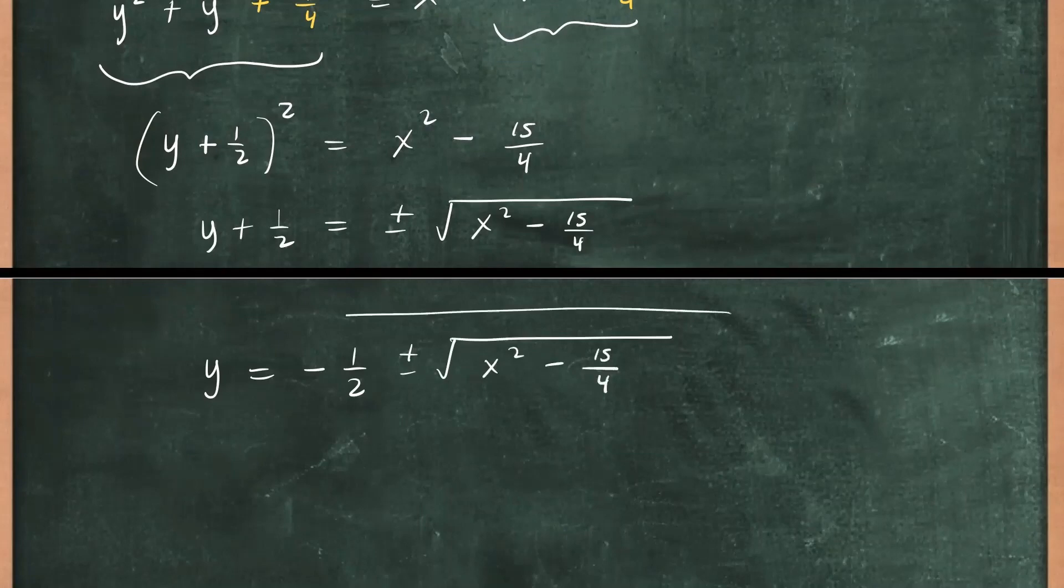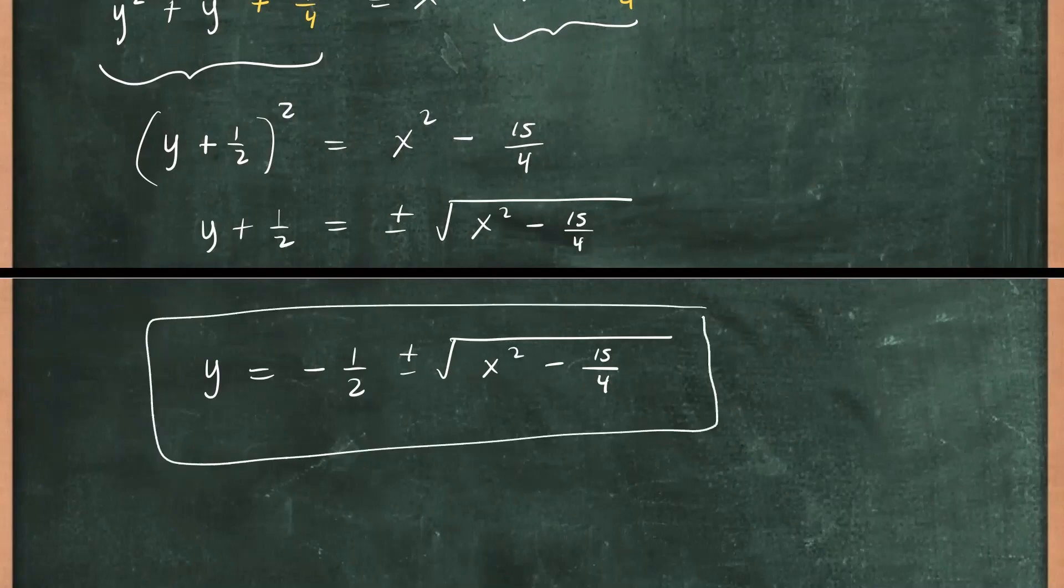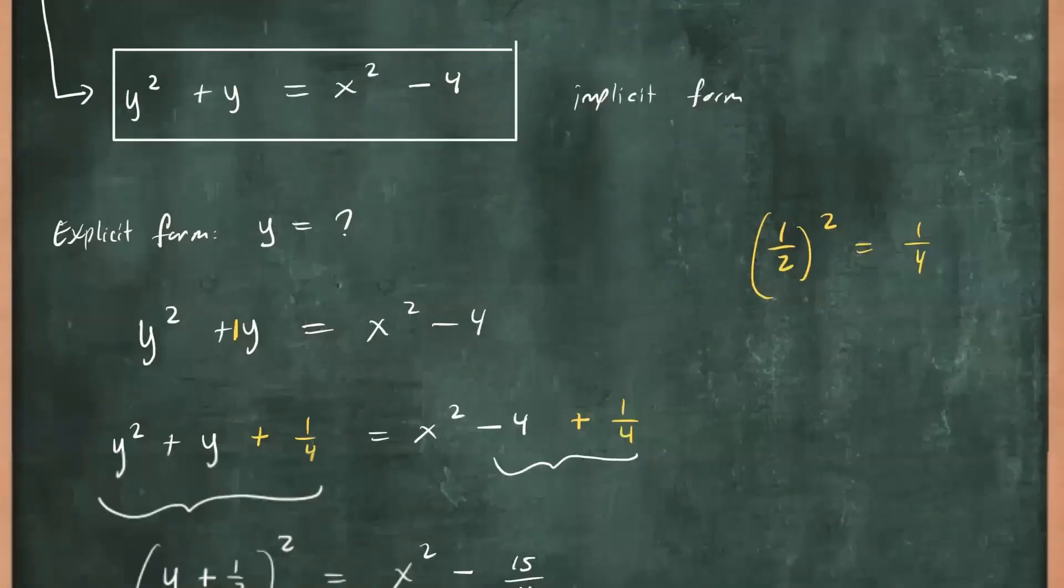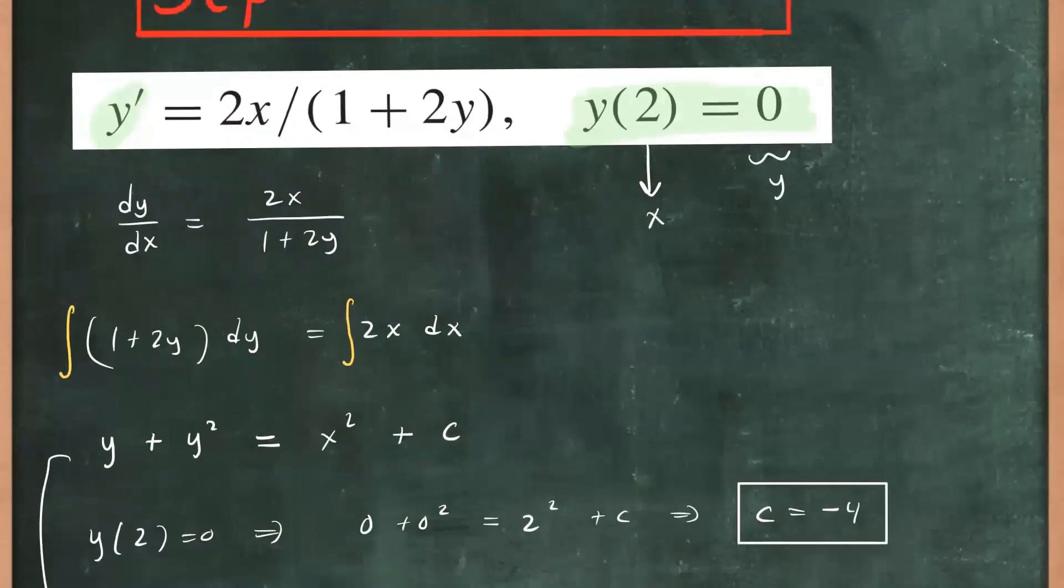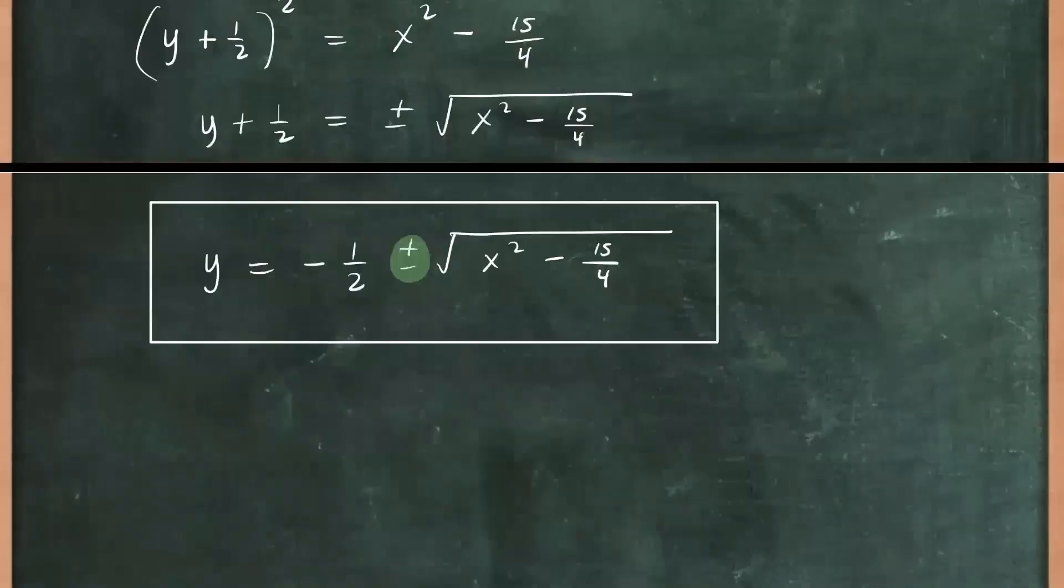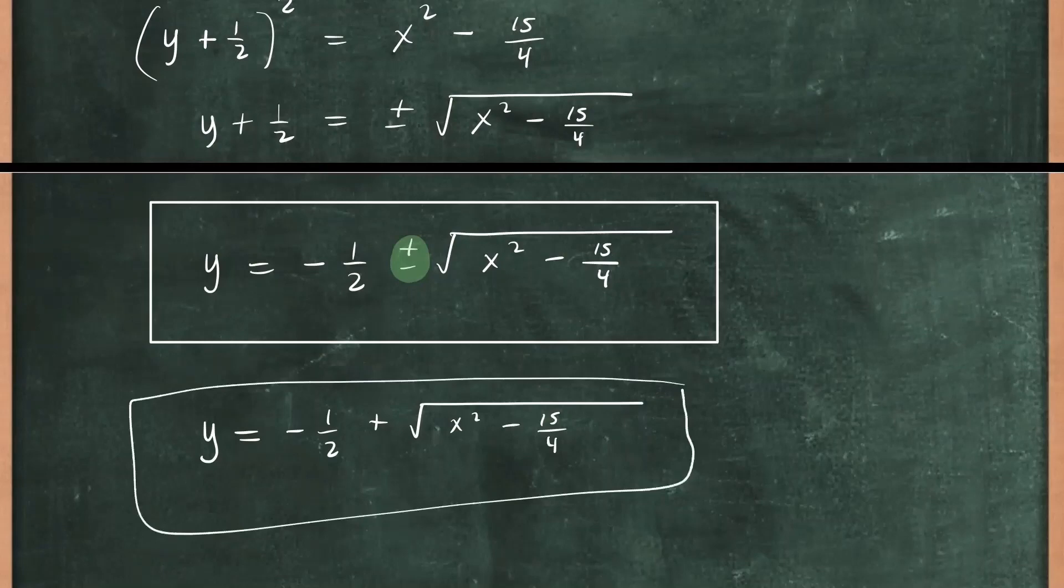So there you have your explicit solution where y is isolated. Now here you would have to make a choice since we have plus or minus in between the terms. So we look at the initial condition. We see that the initial condition we're given was y(2), so your x value is positive. So therefore, we're going to choose the positive square root of that. So because of that condition, another way to express this solution would be -1/2 + √(x² - 15/4). So this is the solution based on the initial condition y(2) = 0.